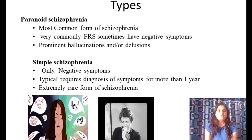Paranoid schizophrenia is the most common form. First rank symptoms are very commonly present, though there may be some negative symptoms. The prominent symptoms are hallucinations, delusions, and suspiciousness.